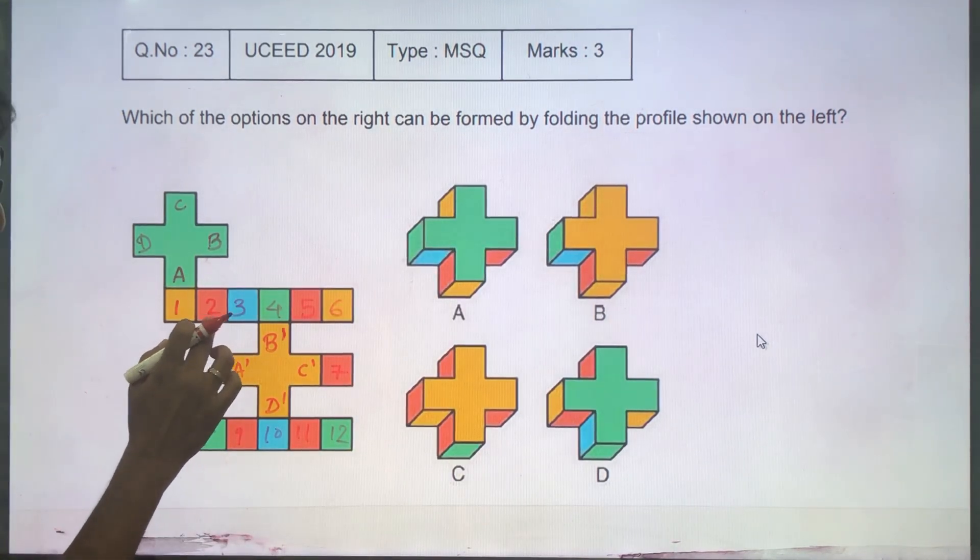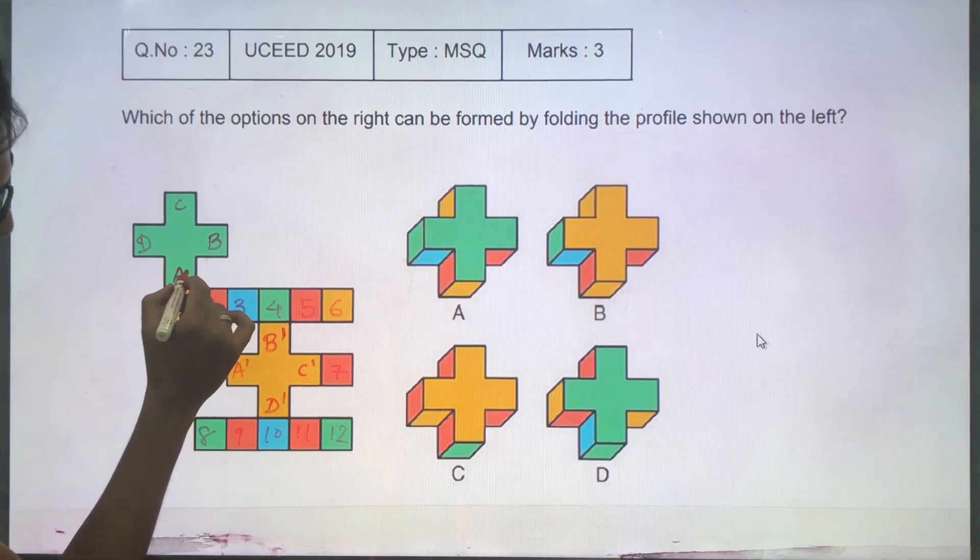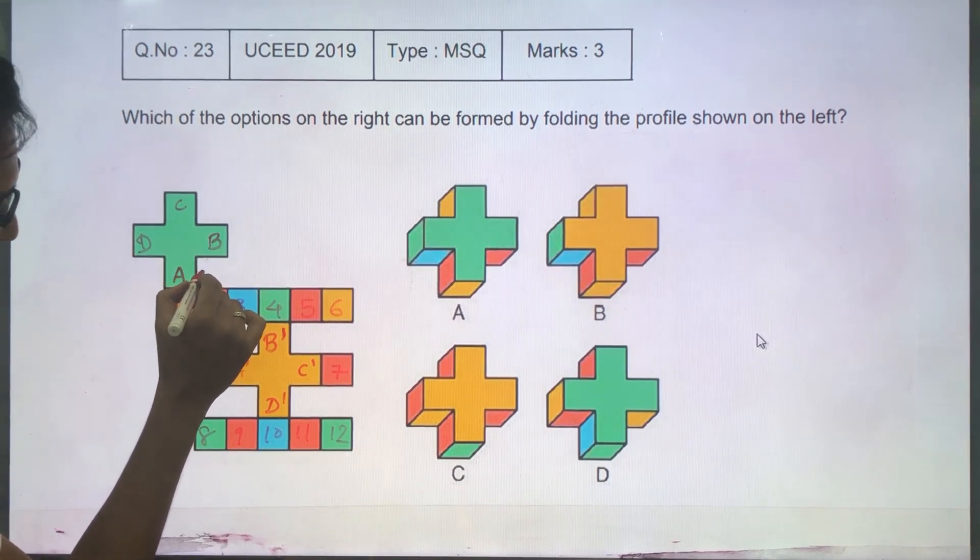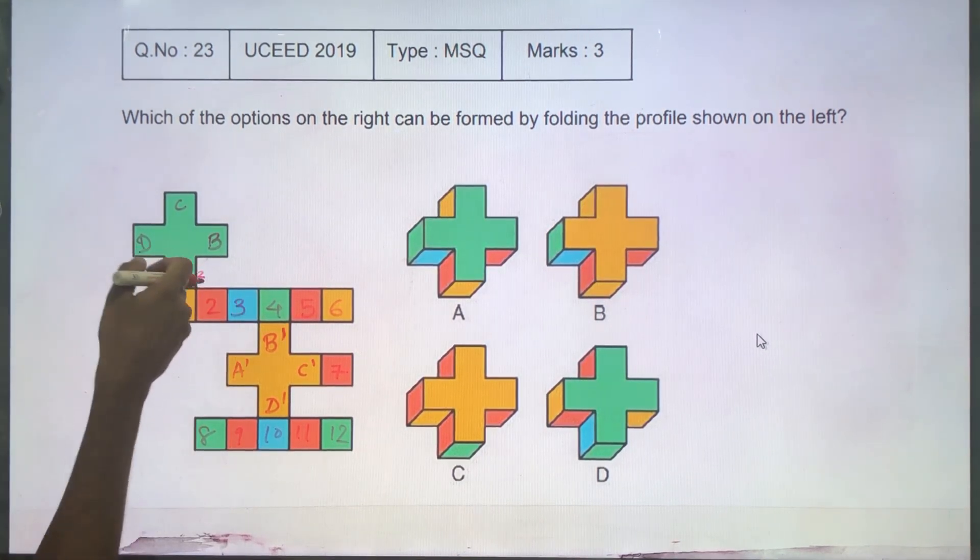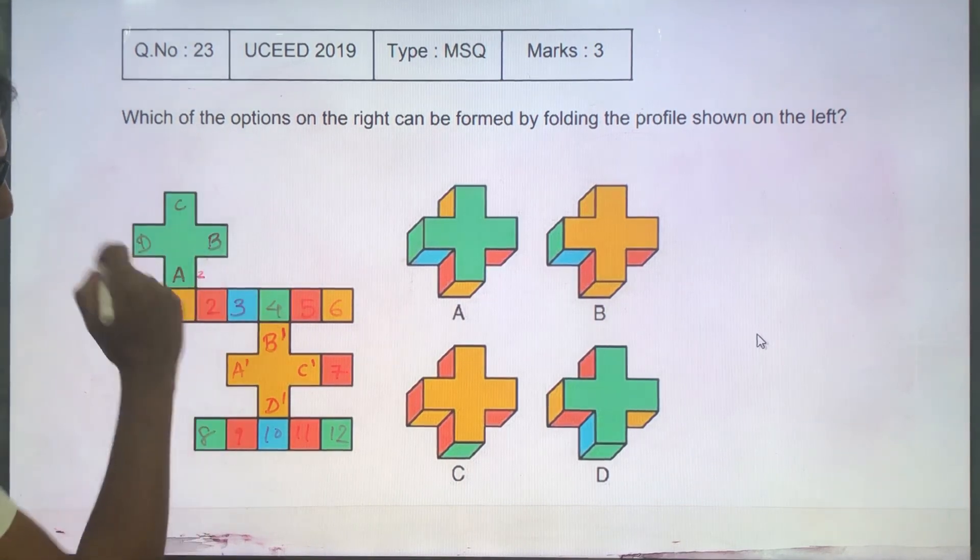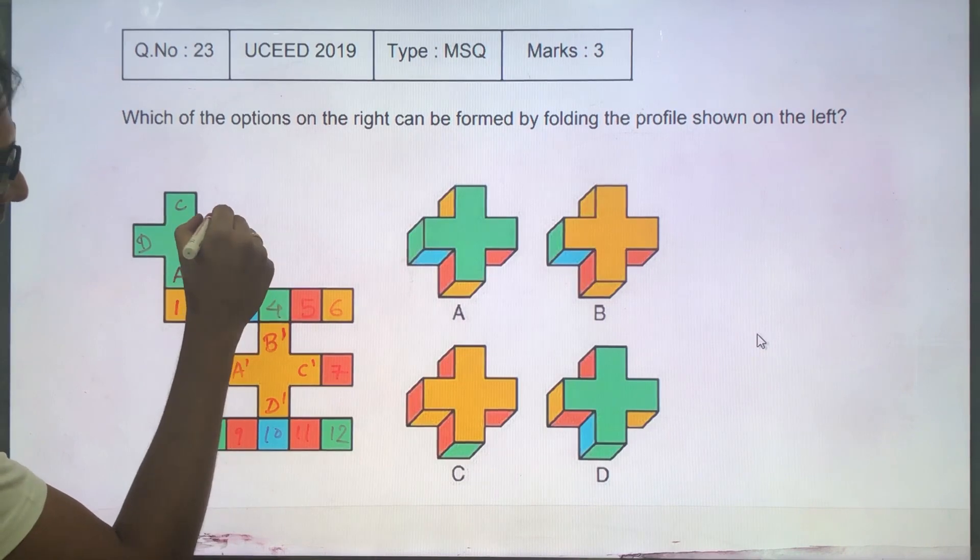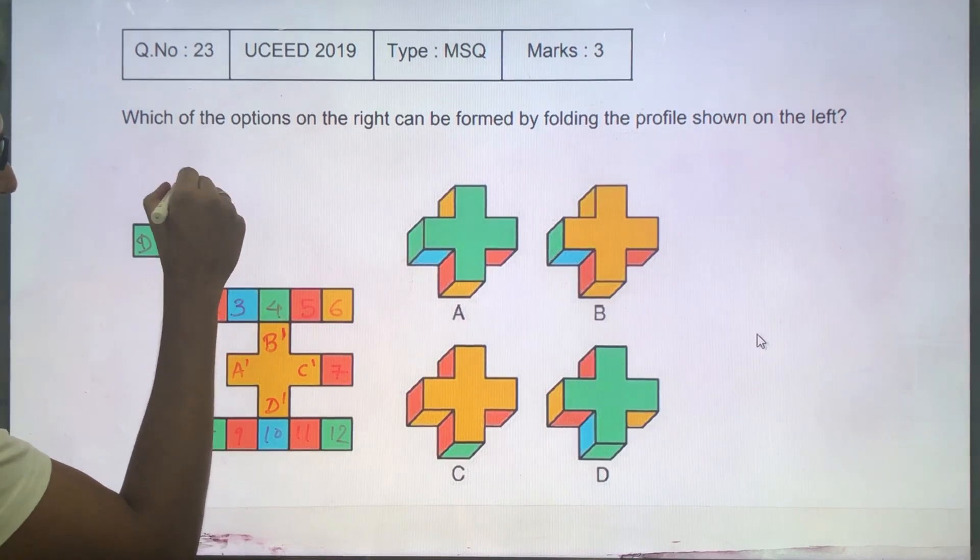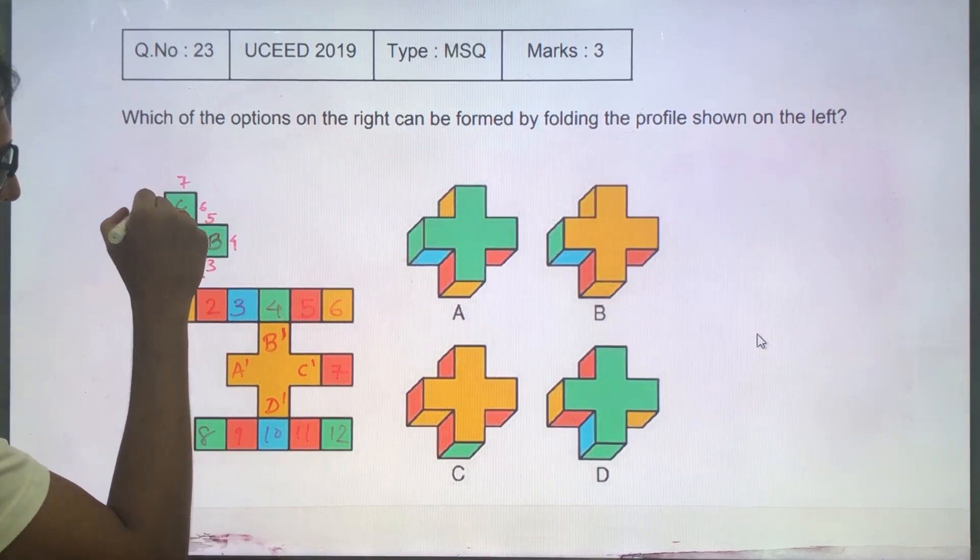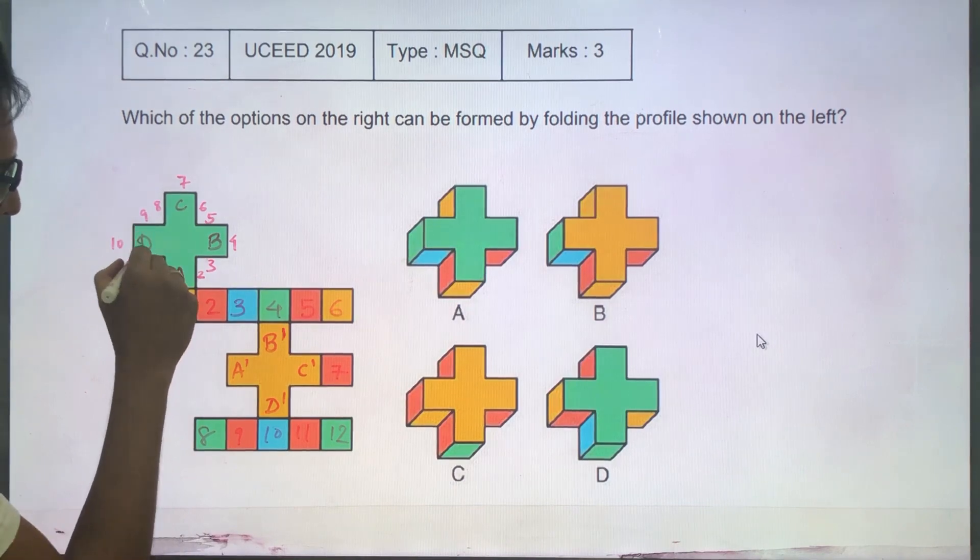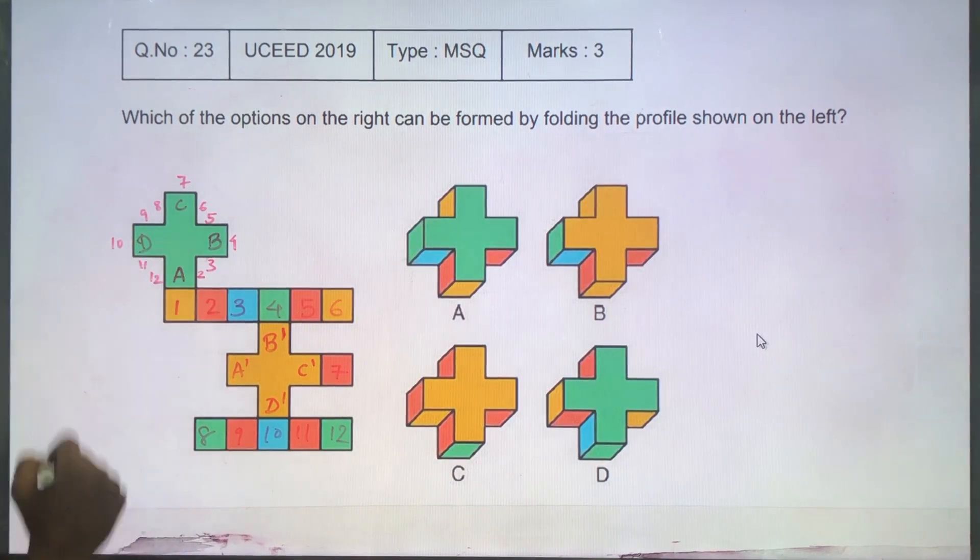Now, where would 2 go? 2 would go next to A here. Okay? It will be this side. And so forth, 3 will go here, 4 will go here, 5, 6, 7, 8, 9, 10, 11 and 12.